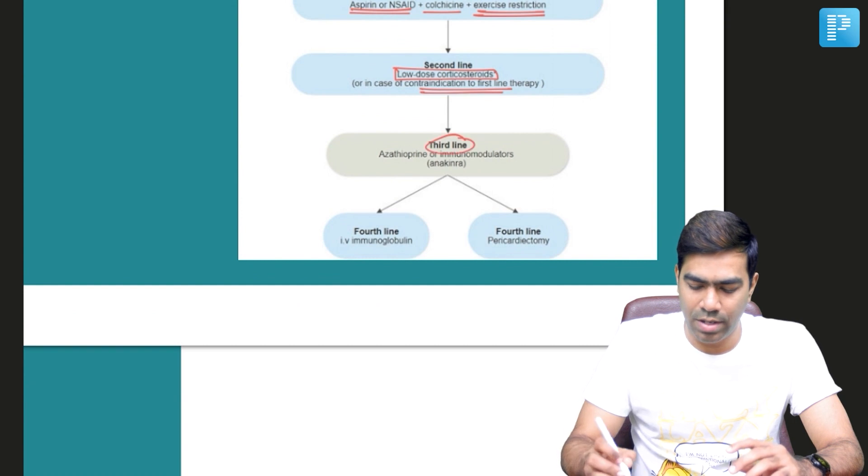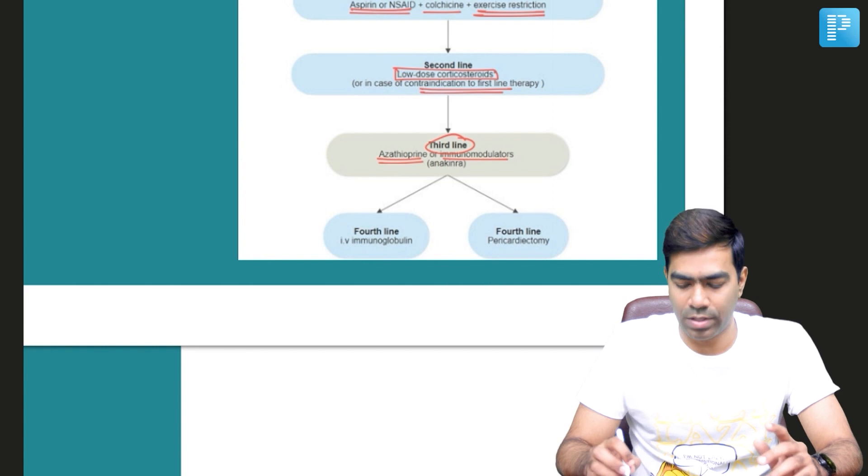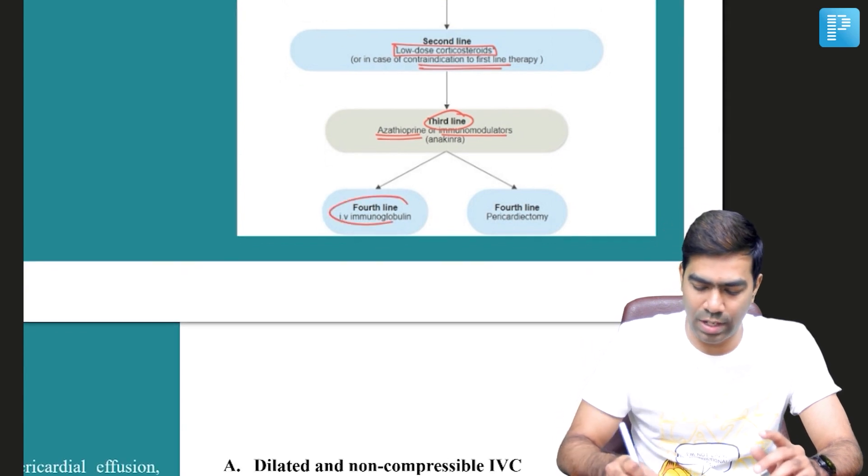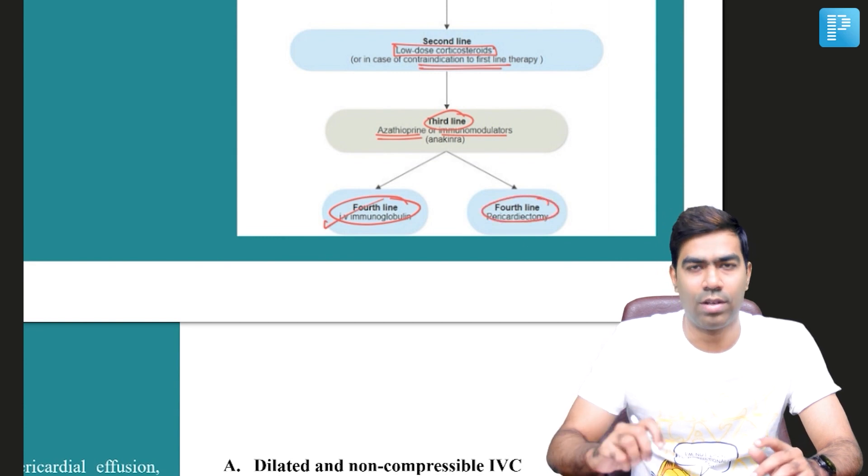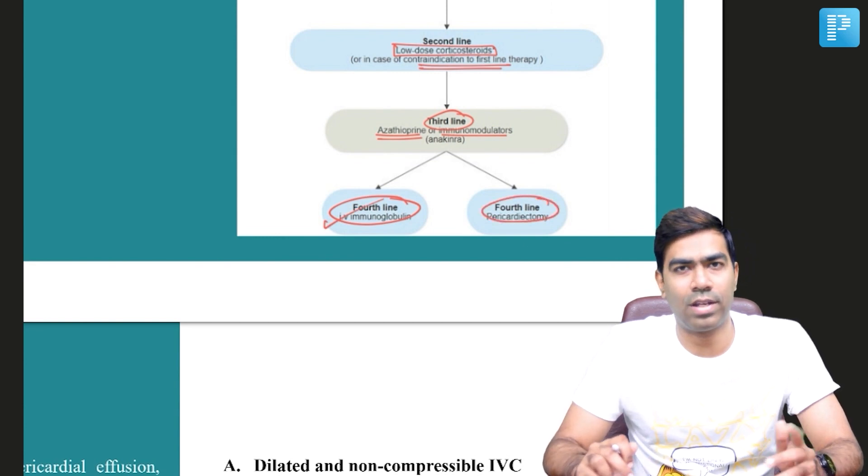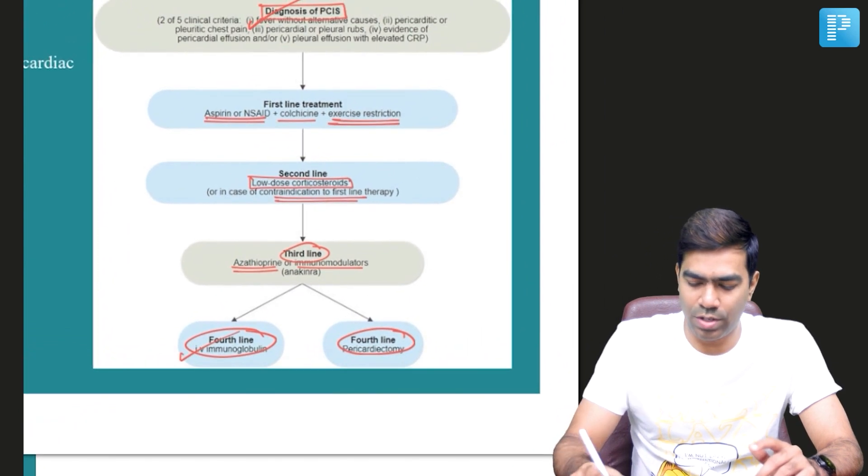Third-line therapy will be with immunosuppressive agents like azathioprine or immunomodulators like anakinra. And the fourth-line treatment in refractory cases will be with IV immunoglobulin or other expensive options like pericardiectomy as well.